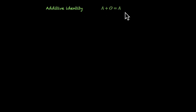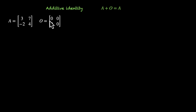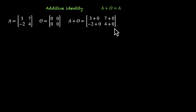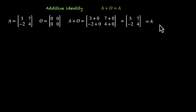Additive identity: A plus the zero matrix gives you A. Here's an example: A = [3, 7, -2, 4]. If we add a zero matrix — and we must use one of the same order, so a 2 by 2 zero matrix [0,0,0,0] — and add the corresponding elements, we get 3+0, 7+0, -2+0, and 4+0. At this step, we can write 3+0 as 3, 7+0 as 7, -2+0 as -2, and 4+0 as 4, because 0 is the additive identity for real numbers. So we get back the same matrix A.